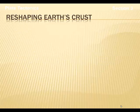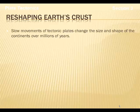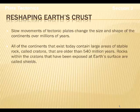Reshaping Earth's crust. As our tectonic plates move, there's a change in size and shape of the continents. Scientists believe this happened over a very long period of time. Today, all of the continents that exist contain large areas of stable rock — we call this a craton. Areas where those cratons are exposed at Earth's surface are called shields.